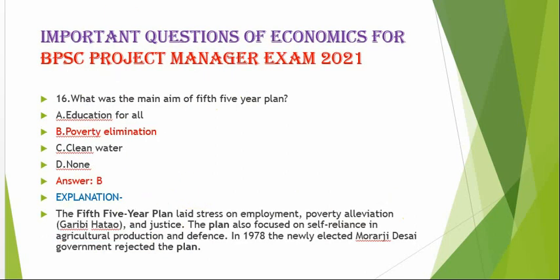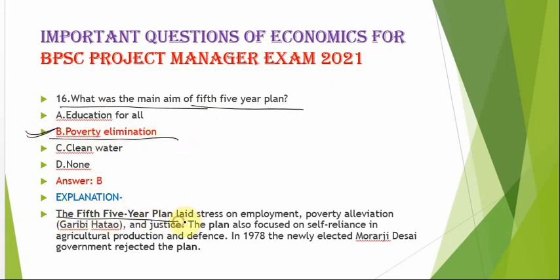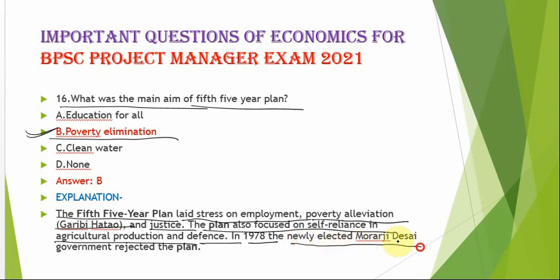The next question is: what was the main aim of the Fifth Five Year Plan? The correct option is option B — poverty elimination. The Fifth Five Year Plan laid stress on employment, poverty alleviation, Garibi Hatao, power, and justice. This plan also focused on self-reliance in agricultural production and defense. In 1978, the newly elected Morarji Desai government rejected this plan.